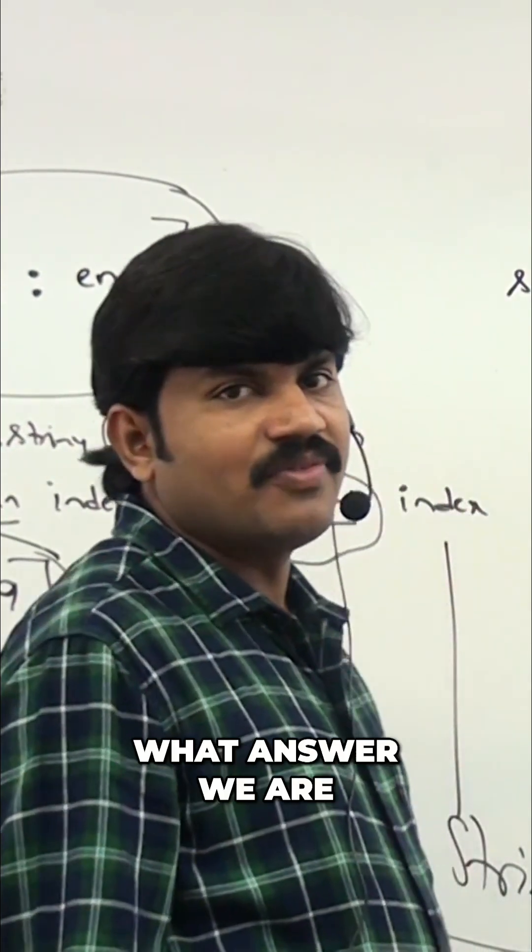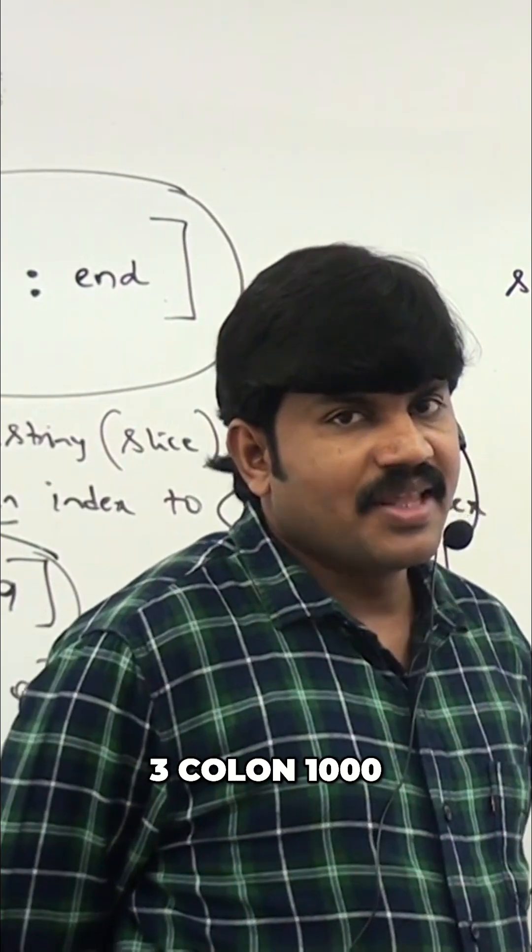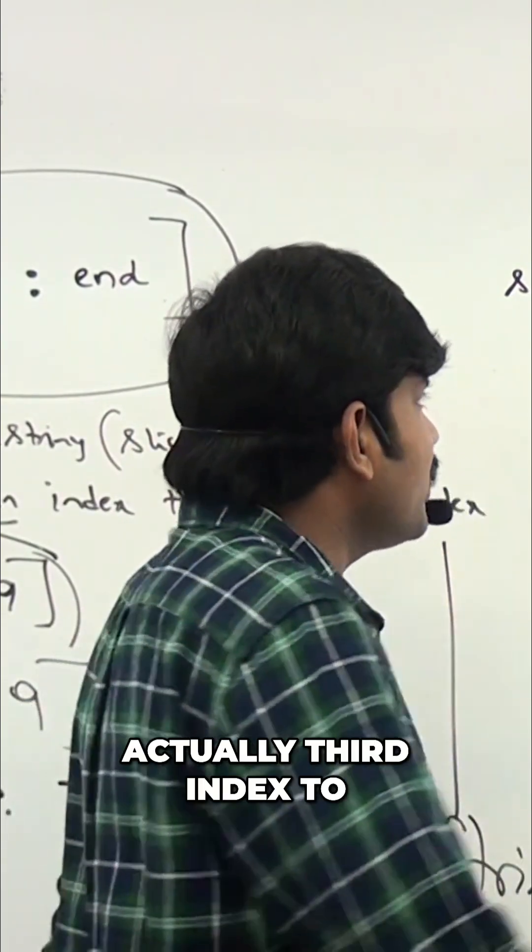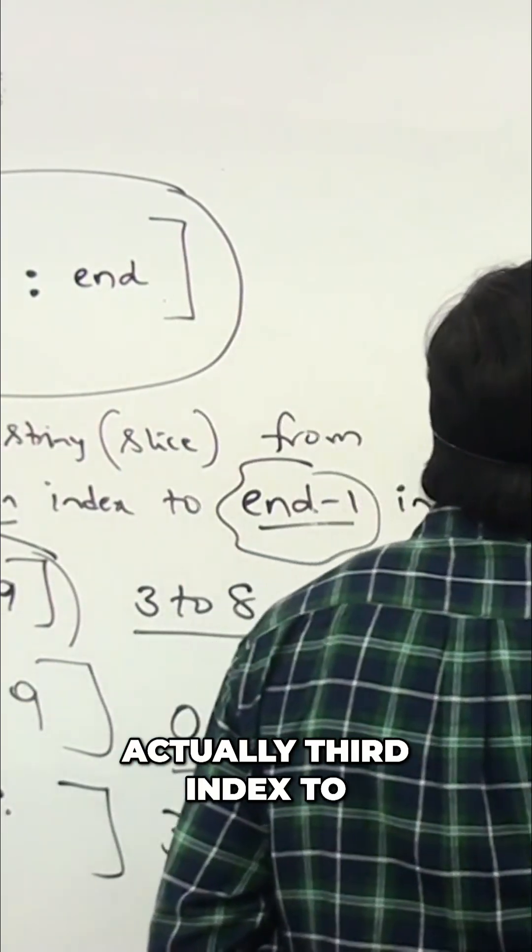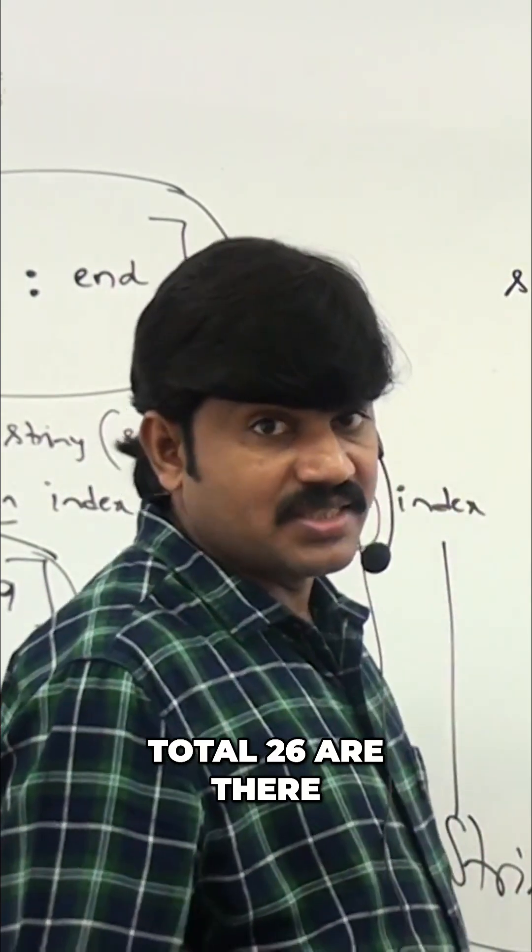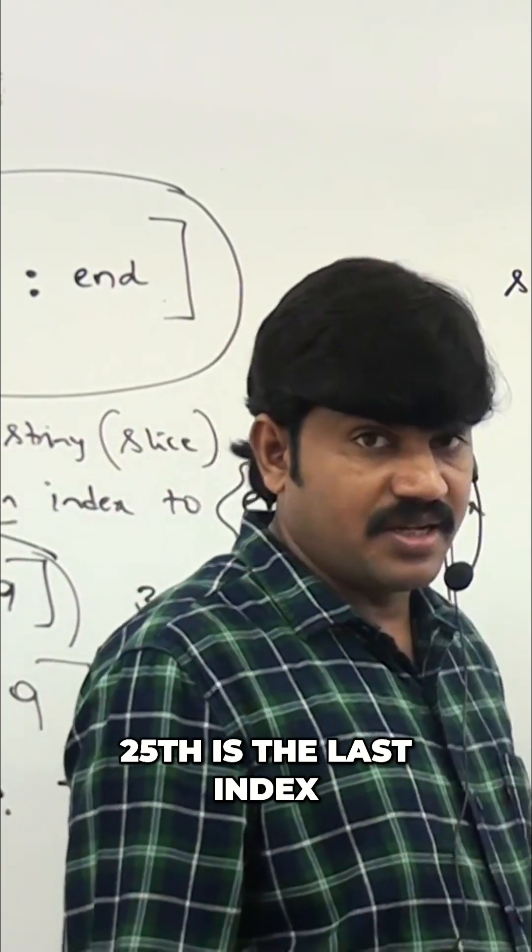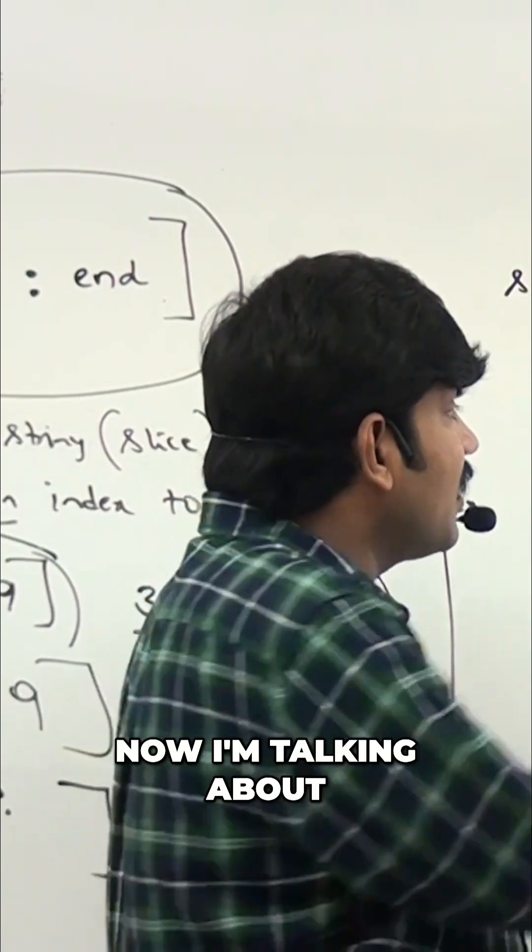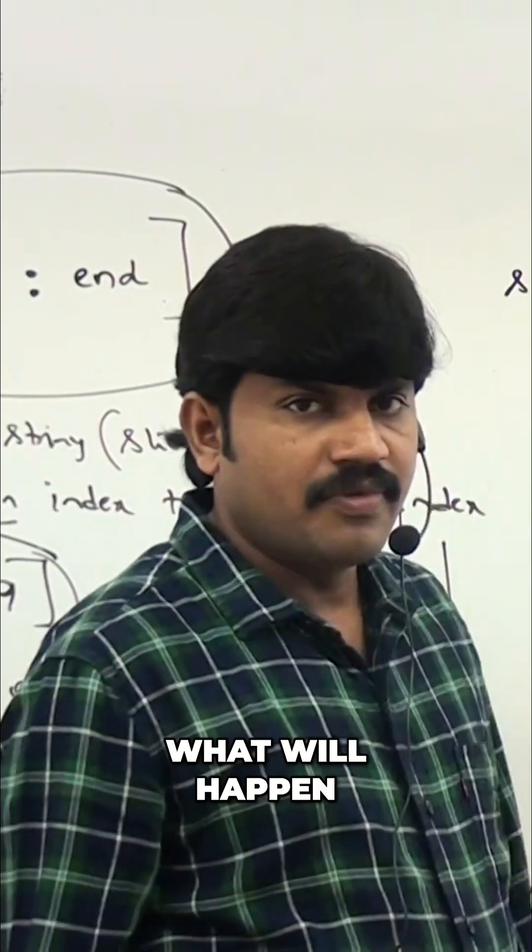Can you please tell what answer we are going to get? Three colon thousand. Actually, third index to 25th index only valid index. Alphabet symbols total 26 are there, 25th is the last index. Now I'm talking about three to thousand, what will happen?